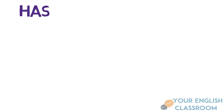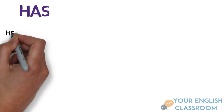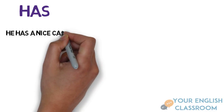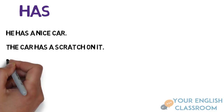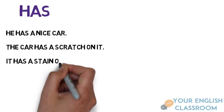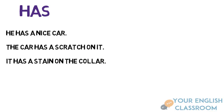We've also got has. Has is used for the third person form of the verb. For example: he has a nice car, the car has a scratch on it, it has a stain on the collar.